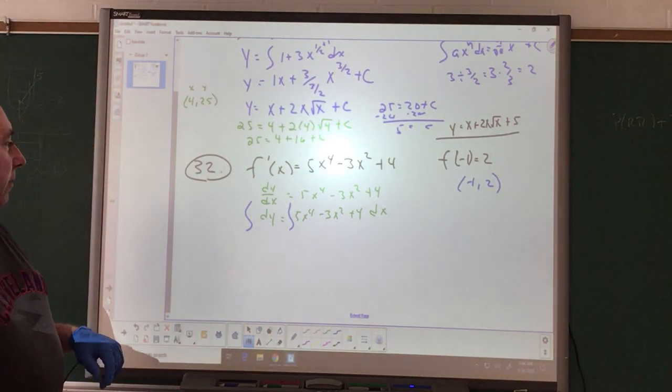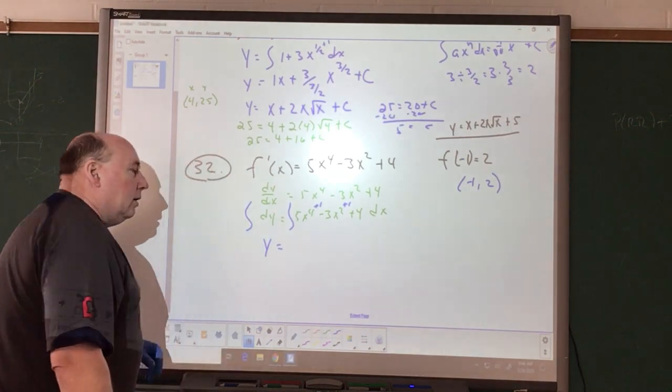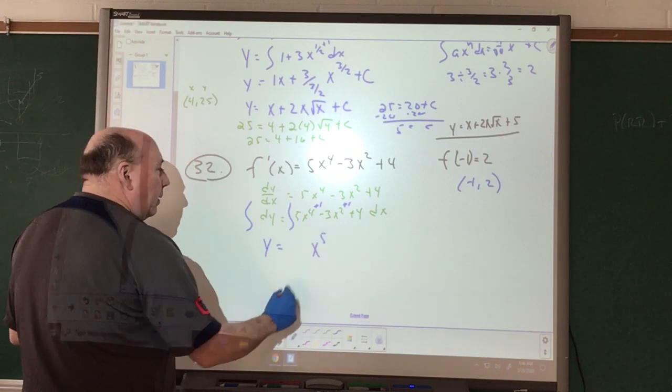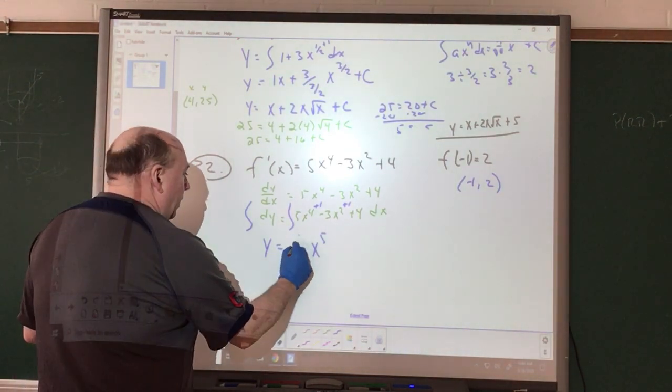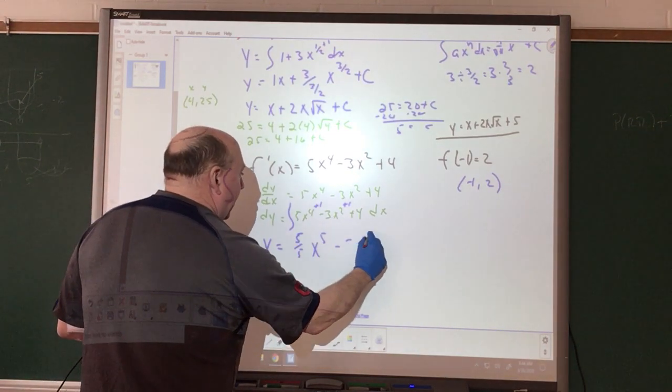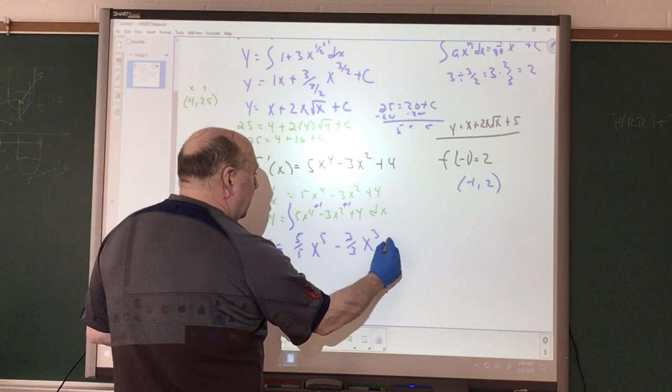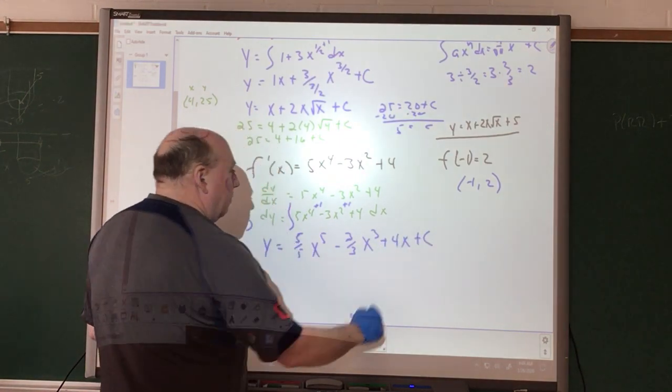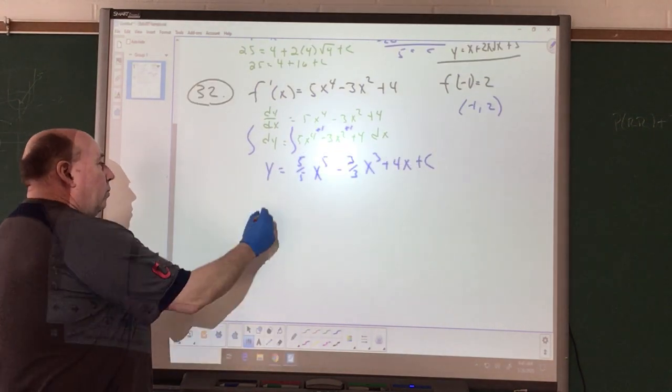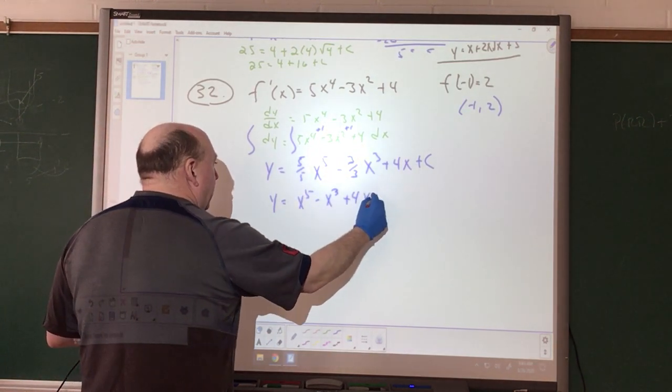What we have here is Y equals adding 1 to each one of my exponents. My new exponent is going to be X to the fifth. So we have 5 divided by 5. Add 1, so we have X to the third. We take our new exponent, divide it into our coefficient. We have a constant there. So we're going to get a 4X plus C. So simplifying this, we have Y equals X to the fifth minus X cubed plus 4X plus C.